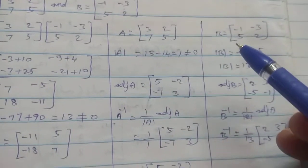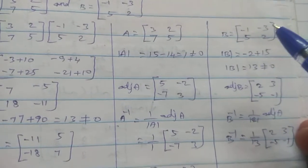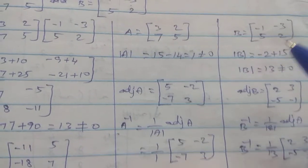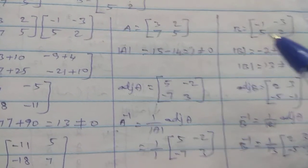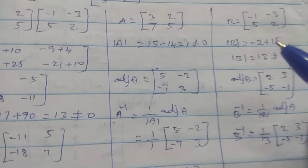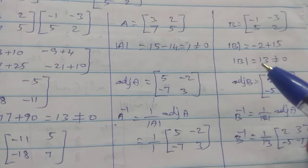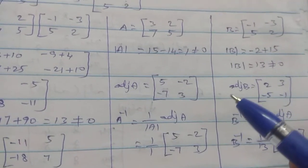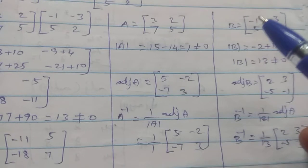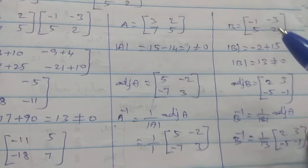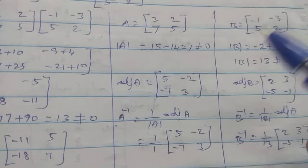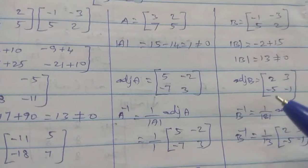Next, B inverse find out. B equals [-1, -3; 5, 2]. Determinant of B: minus 1 into 2 is minus 2, minus 5 into minus 3 is minus 15, minus of minus is plus 15. So 15 minus 2 equals 13, which is not equal to 0. Adjoint of B: main diagonal interchange gives 2, minus 1. Another diagonal sign change gives 3, minus 5.